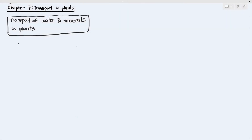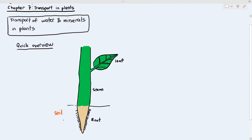In this video, what we are going to be looking at is the transport of water and minerals in the plant. Before we go into the detail of it, I want to give a quick overview of how water and minerals move inside the plant. As you can see in this diagram of the plant, you can see the root, stem and leaves.